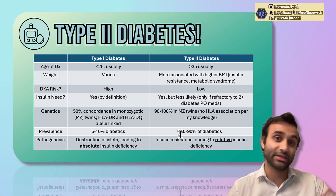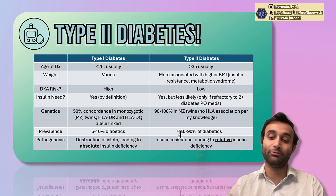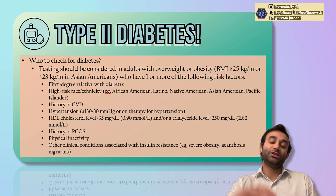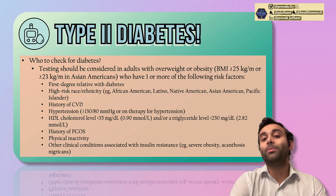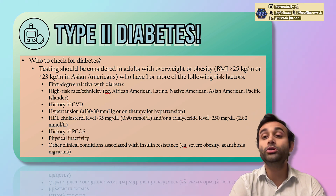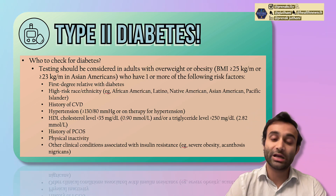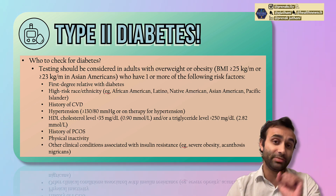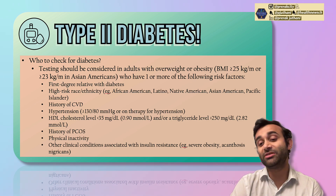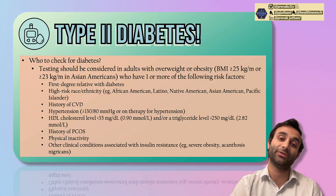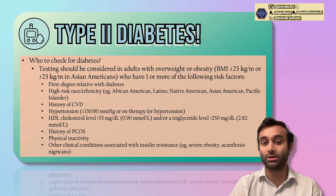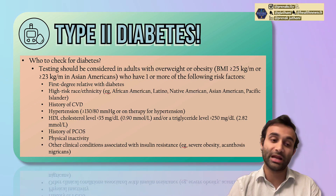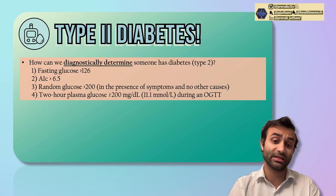Type 1 is complete destruction and type 2 is a relative insulin deficiency in the setting of insulin resistance. You might be wondering how do we check for diabetes, and when and who should we check? I usually check almost everyone, because diabetes in the American population is very common, and specifically a BMI above 25 or 23 is also relatively common in Western culture. The first way to check is to have someone fast — eat nothing after midnight — and if their blood glucose is above 126 in the fasting state, that is essentially diagnostic of type 2 diabetes.